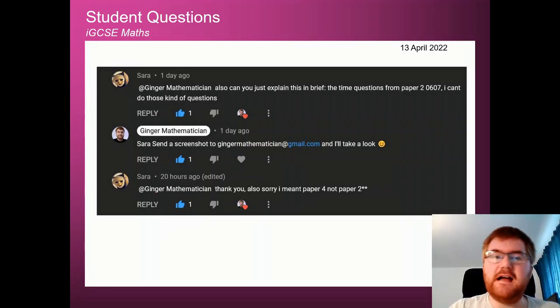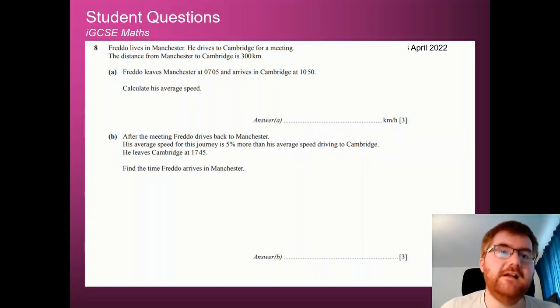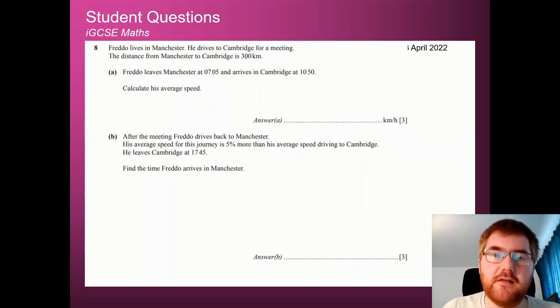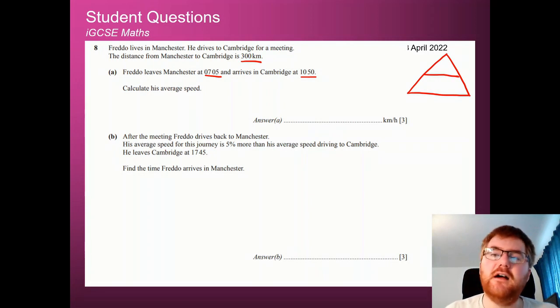So let's have a look at Sarah's question. This is based on speed distance time. Now, Freddo, good old Freddo, lives in Manchester and he drives to Cambridge for a meeting. Suitable, since this is the Cambridge exam board. And the distance from Manchester to Cambridge is 300 kilometres. And Freddo leaves Manchester at 7:05 and arrives in Cambridge at 10:50, which sounds about reasonable. I need to calculate the average speed. So as soon as I see speed in a question, I have almost ready in my mind, or you can write it down, the speed distance time triangle. So this is one you need to know for the IGCSE course and not just maths, but also physics as well.